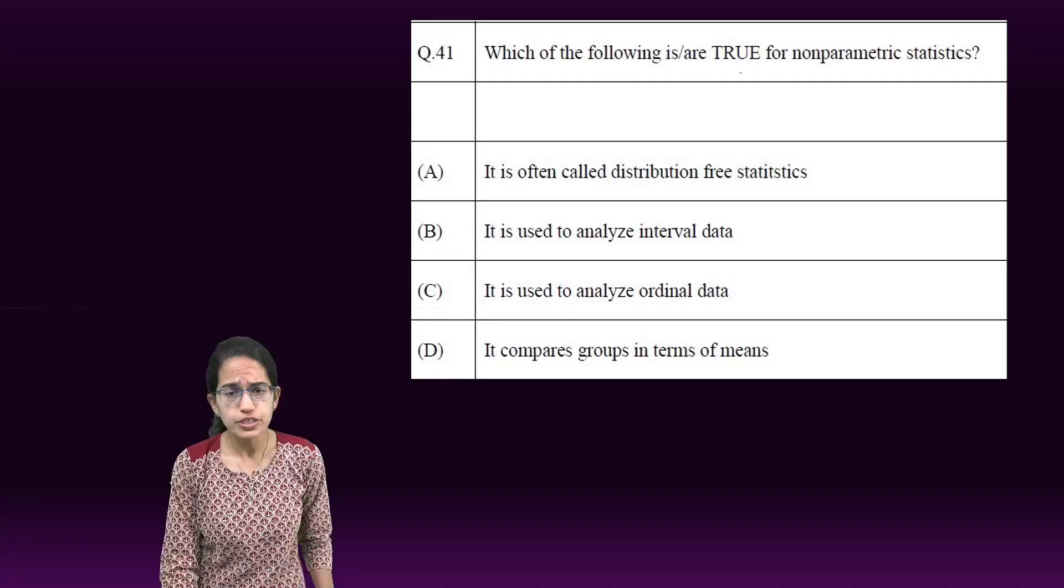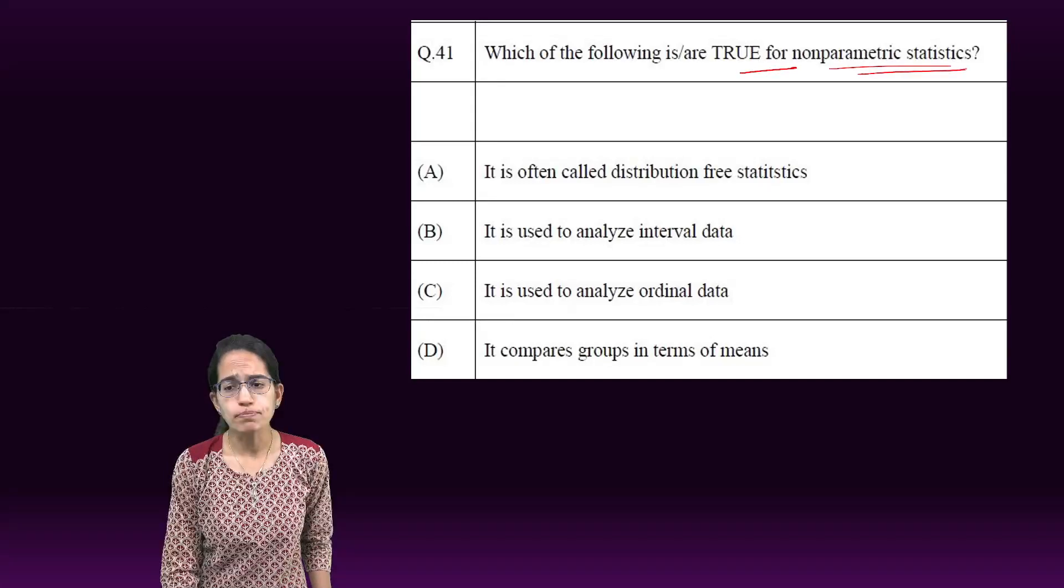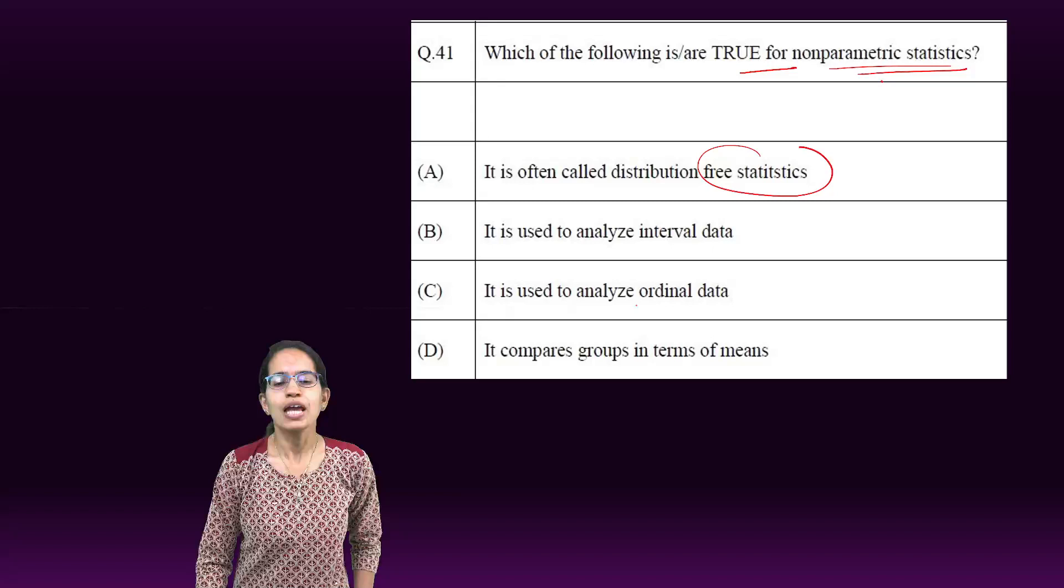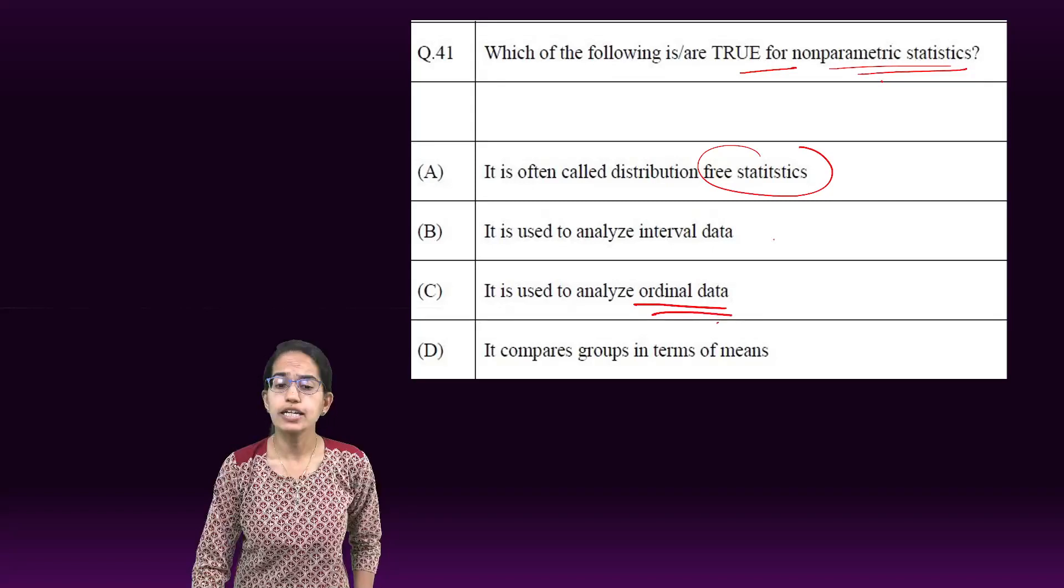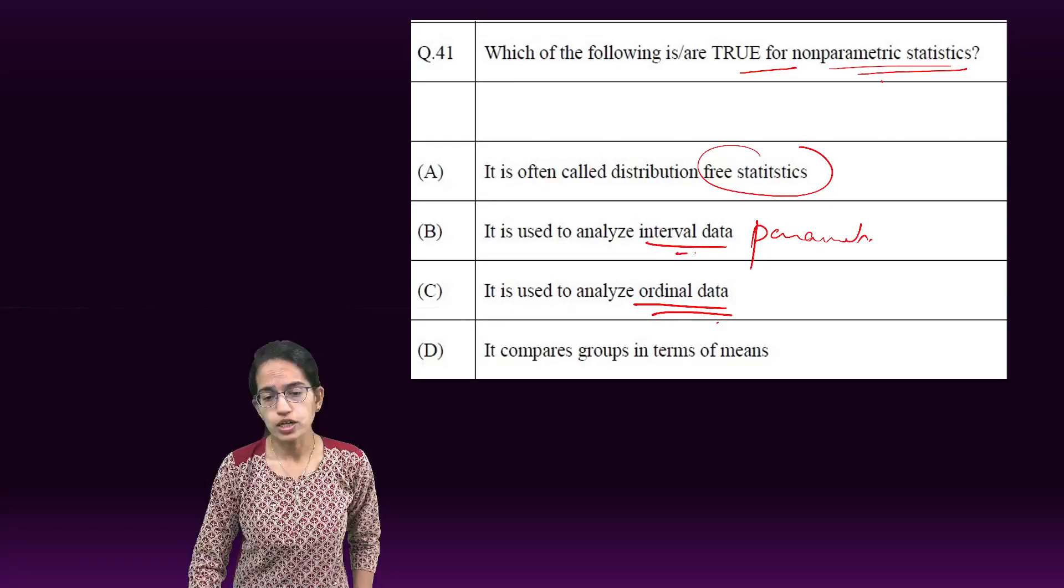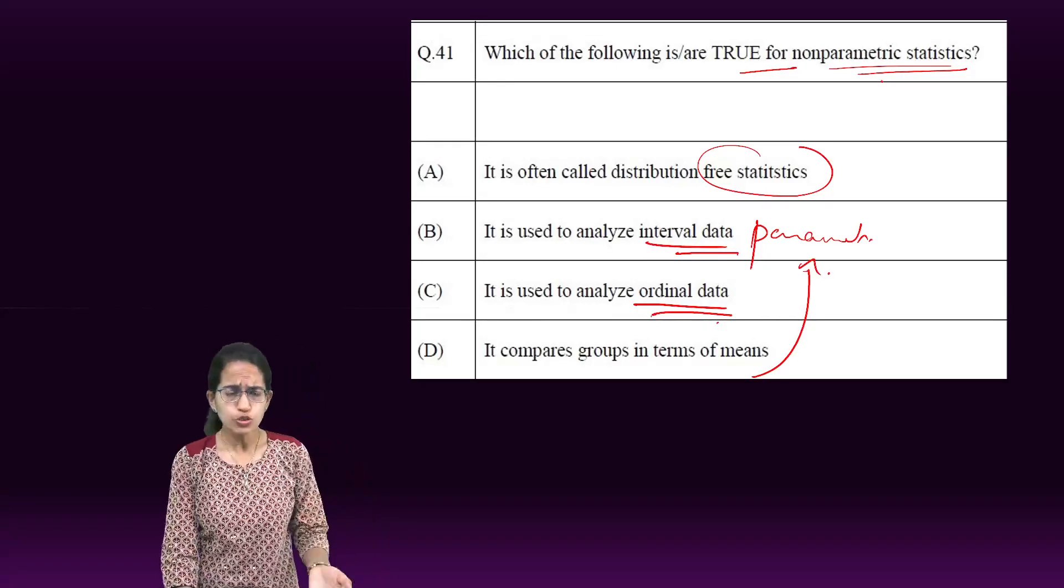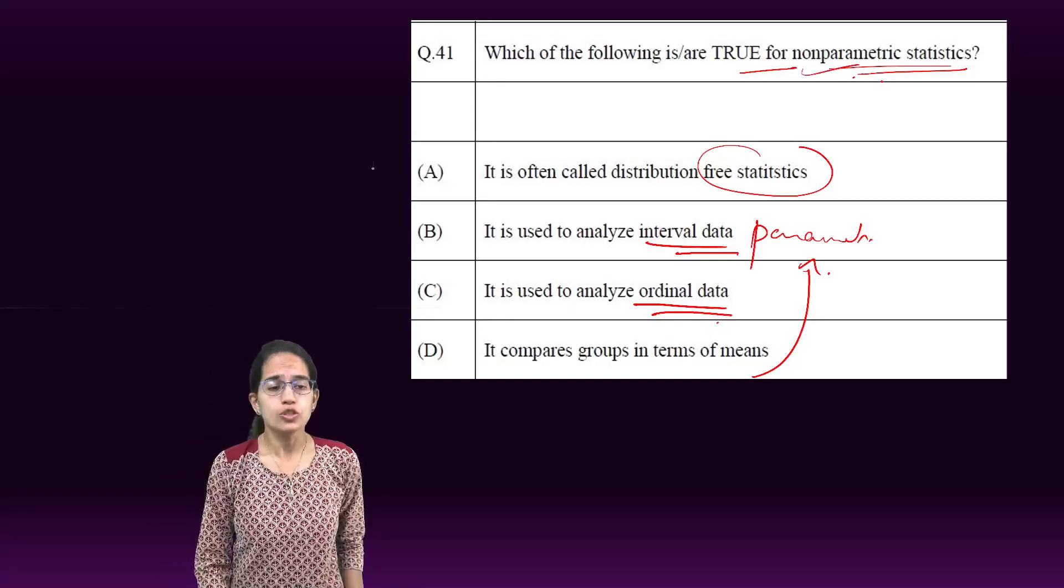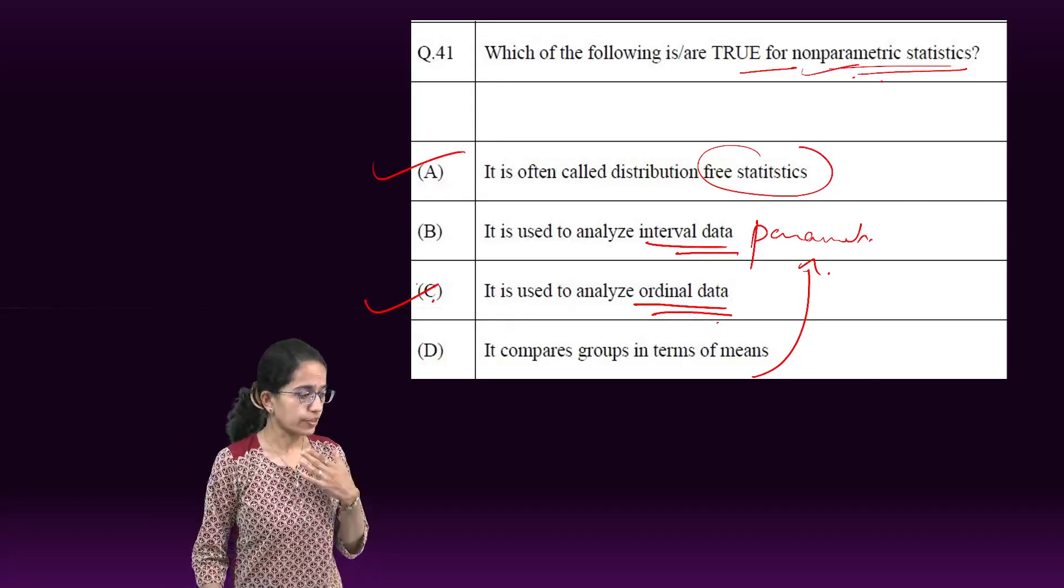Which of the following are true for non-parametric test? Non-parametric test is also known as free distribution and it analyzes ordinal data, in contrast to parametric test which focuses on interval data and means. Mann-Whitney U test is a good example of non-parametric test, so A and C become the right options here.